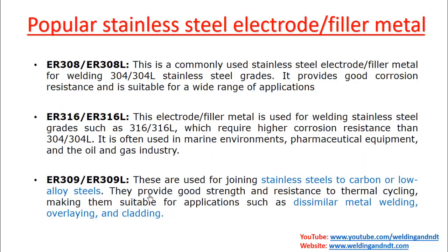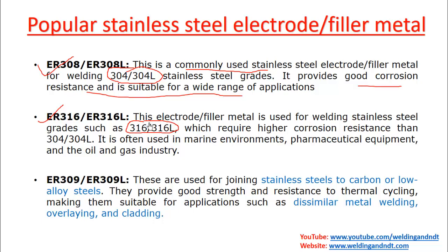The popular stainless steel electrodes include ER308 and ER308L, which are commonly used to weld 308 or 308L parent metals, providing good corrosion resistance and suitability for a wide range of applications. ER316 and ER316L are used to weld 316 or 316L parent metal and provide higher corrosion resistance. They are used in marine environments, pharmaceutical equipment, and the oil and gas industry.